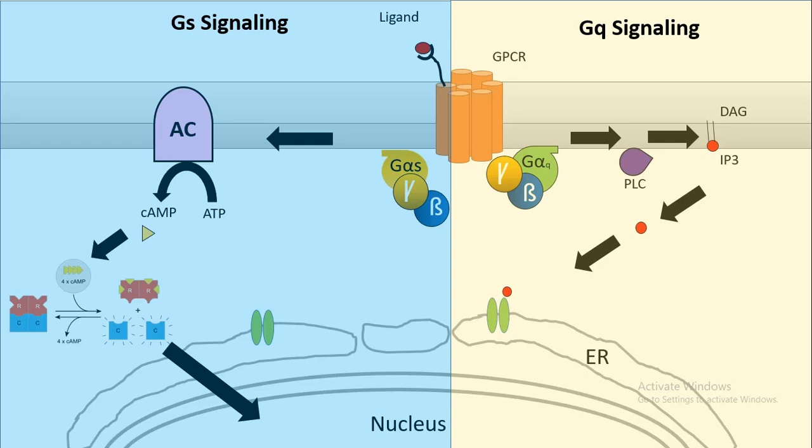That activates protein kinase C and thereby subsequent signaling happens. So be it GQ signaling or GS signaling, G proteins work like molecular switches. They have two configurations, on and off. In a GDP bound state, they are in an off situation.